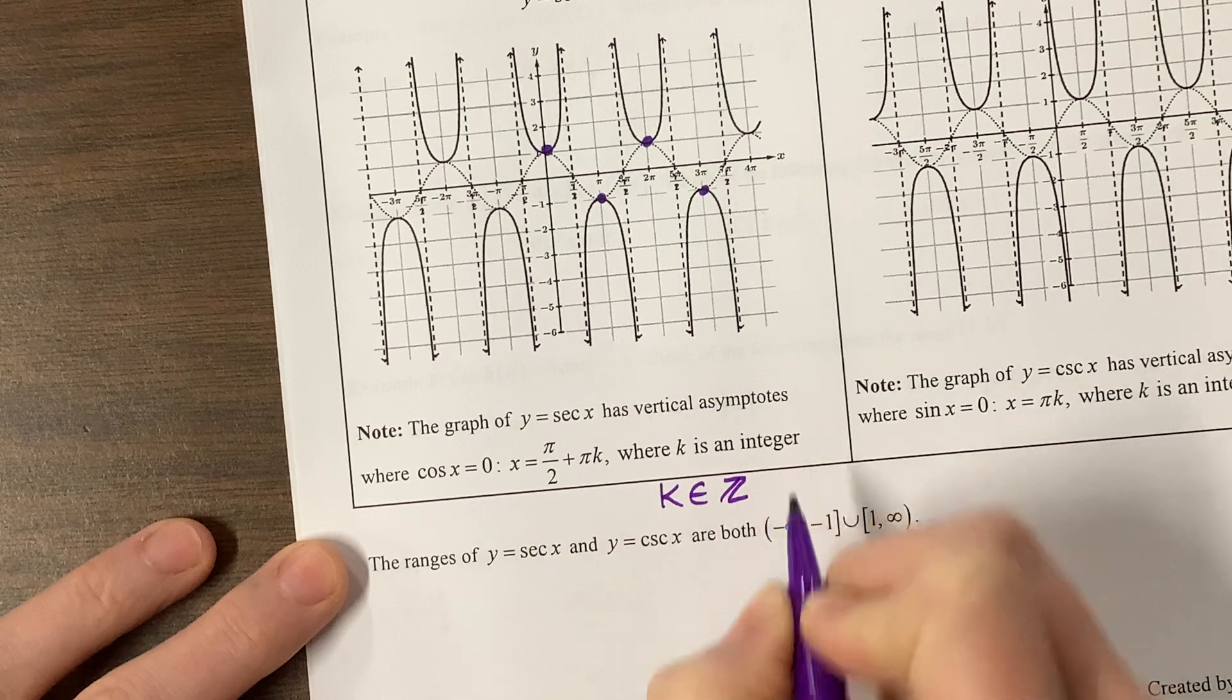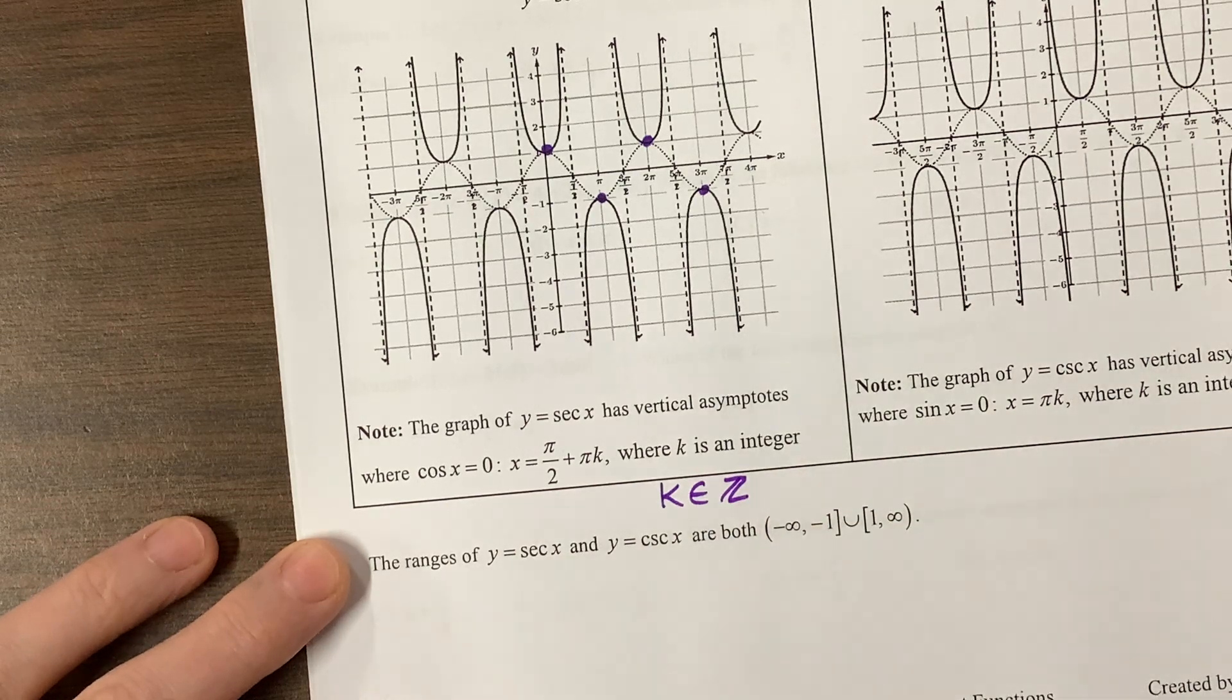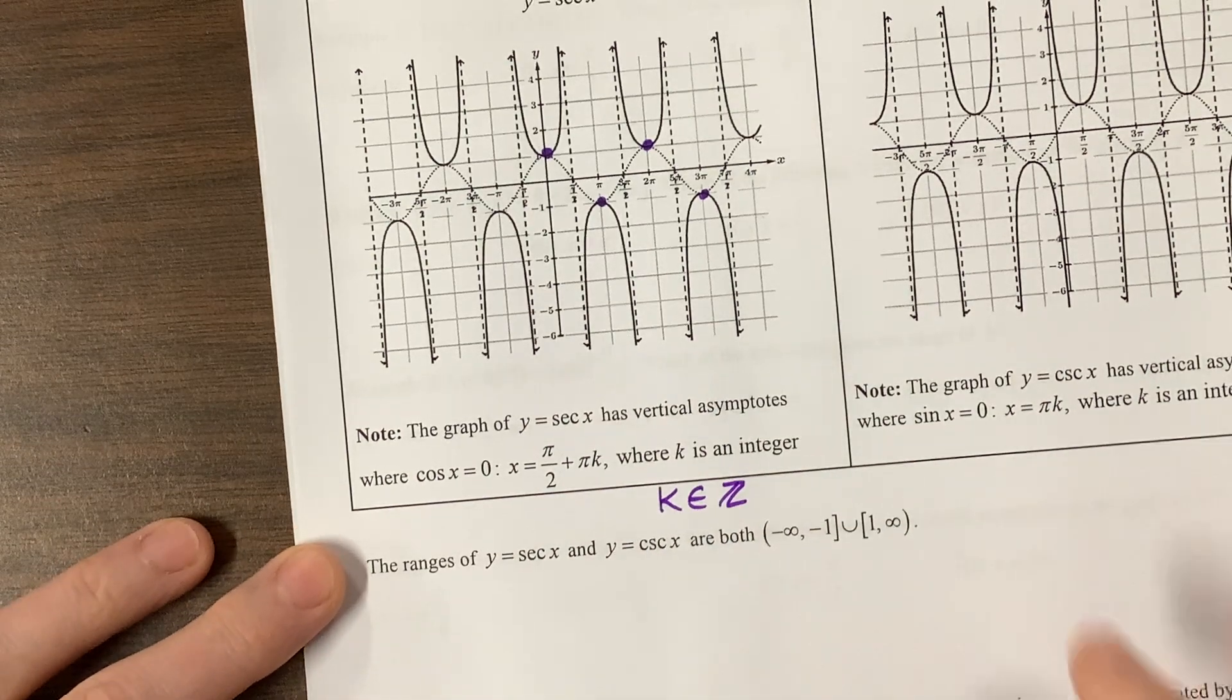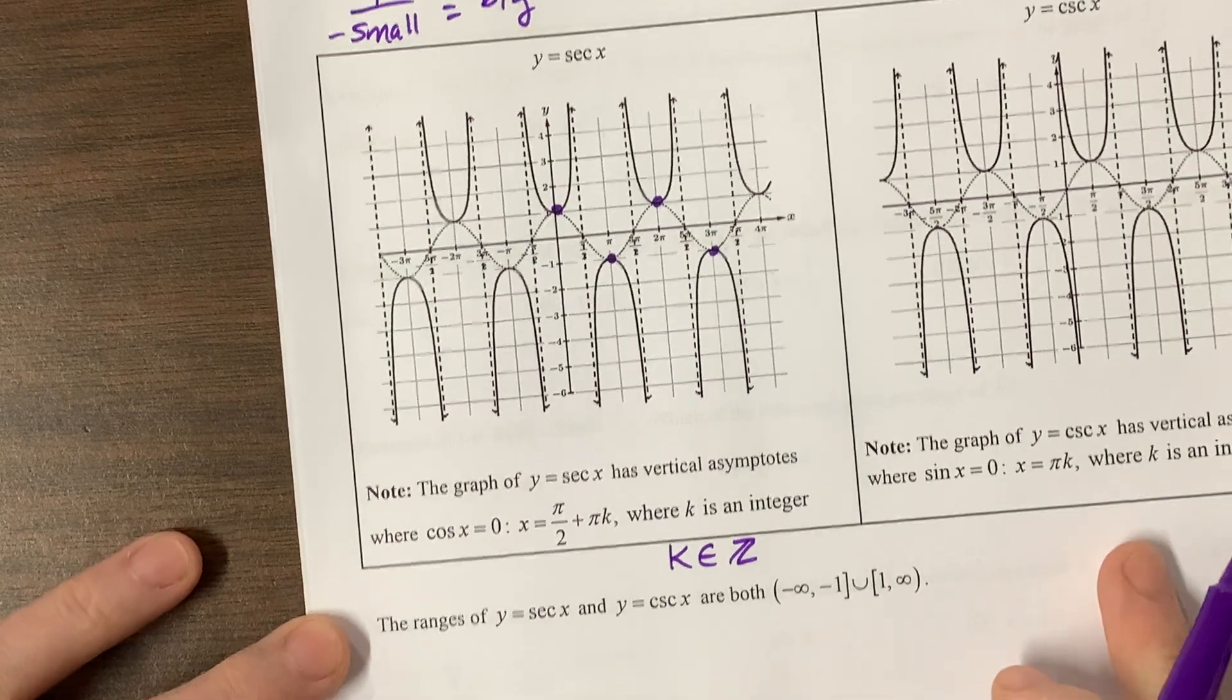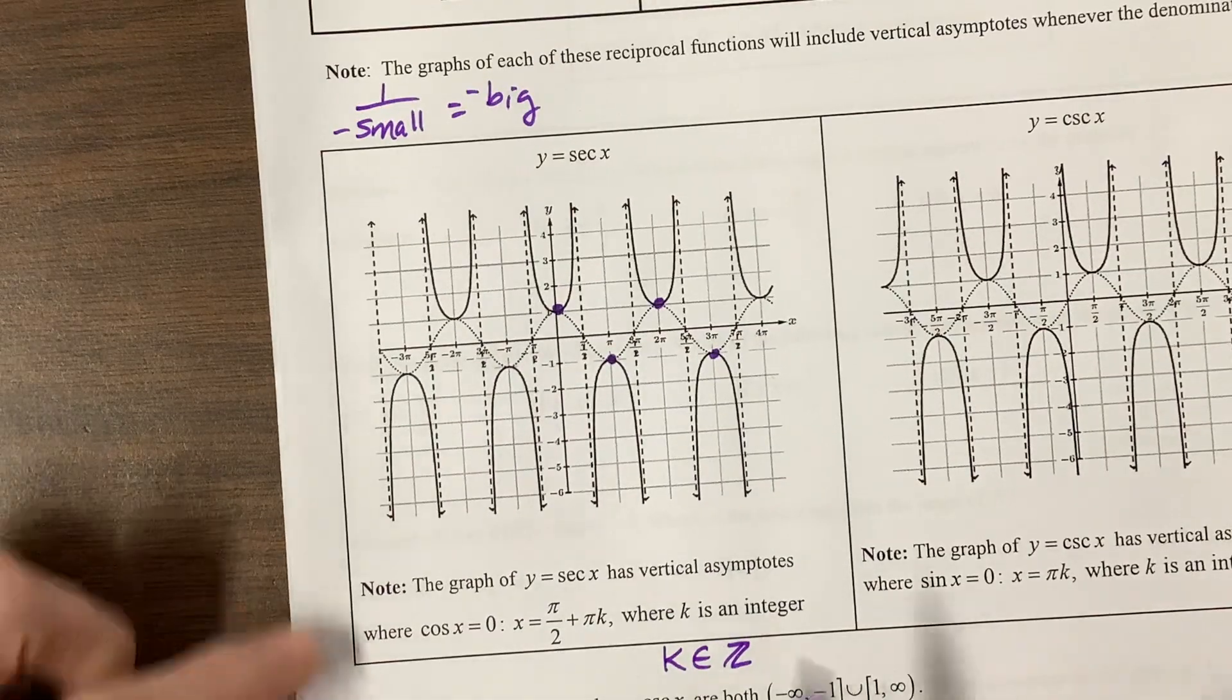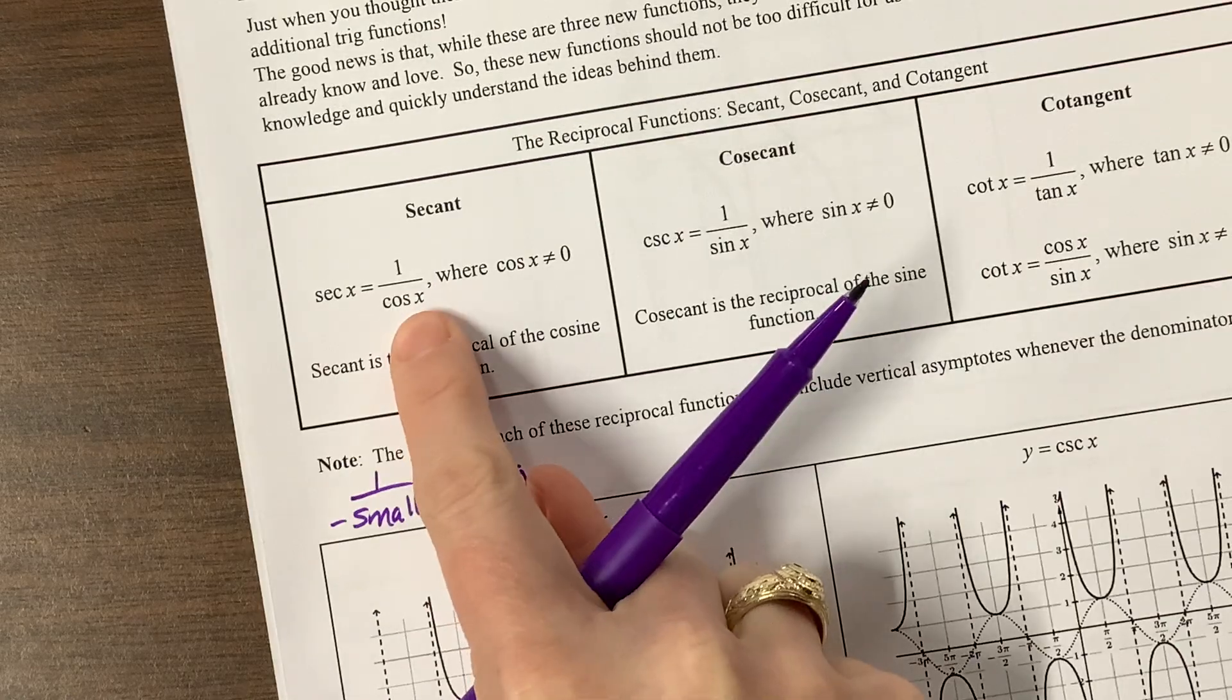The graph of secant has vertical asymptotes where cosine equals 0. We like to use x is equal to pi over 2 plus pi k, where k is an integer. In my class, we use symbolic notation: k is an element of Z. We nicknamed that 'kes.' That's secant, which is 1 over cosine.